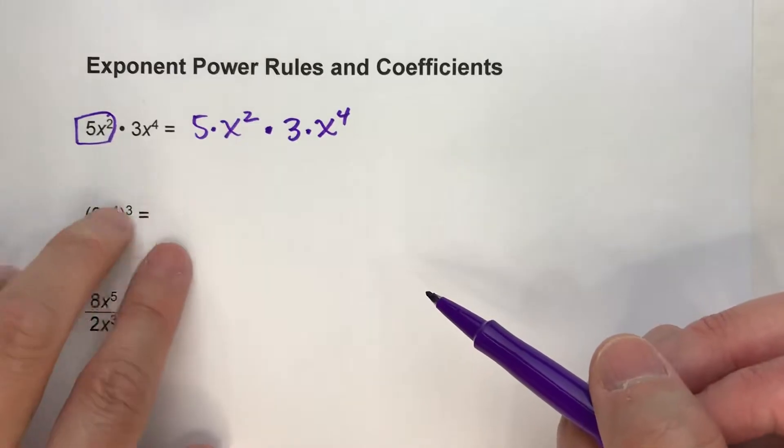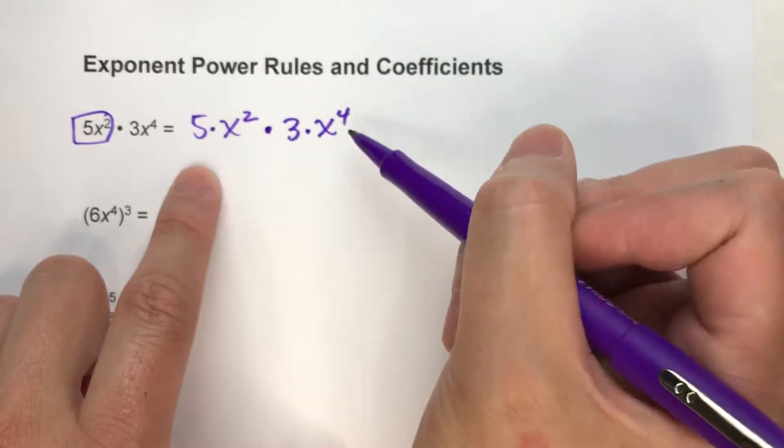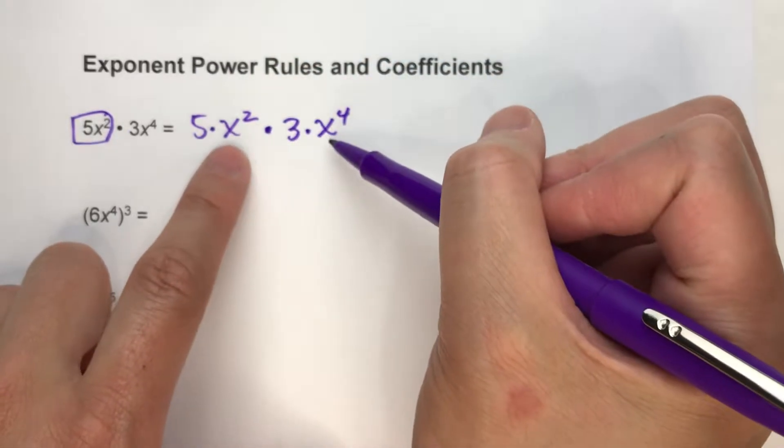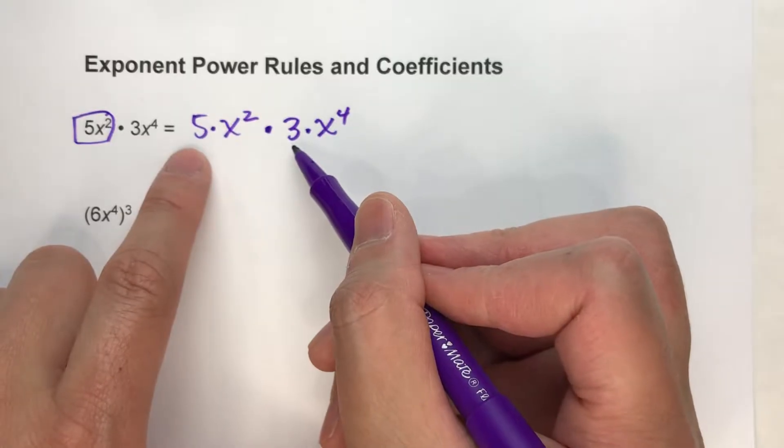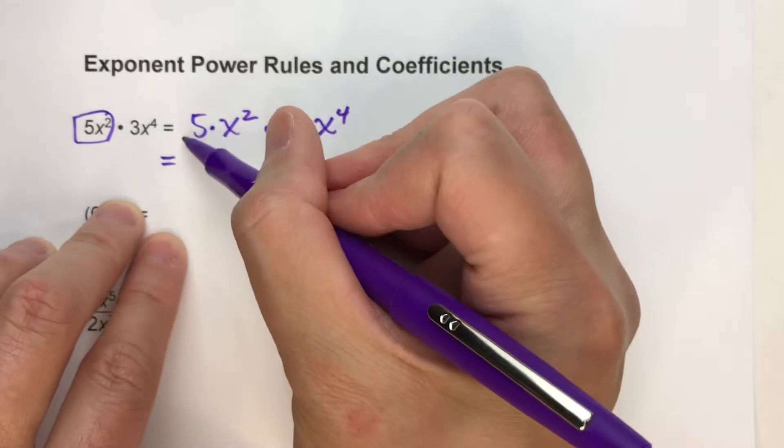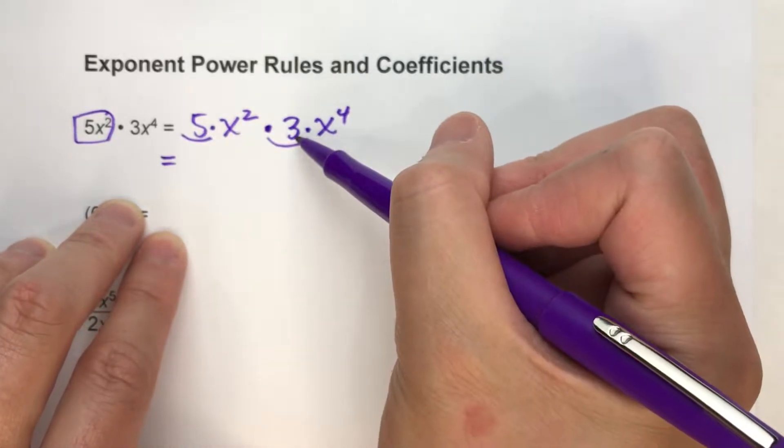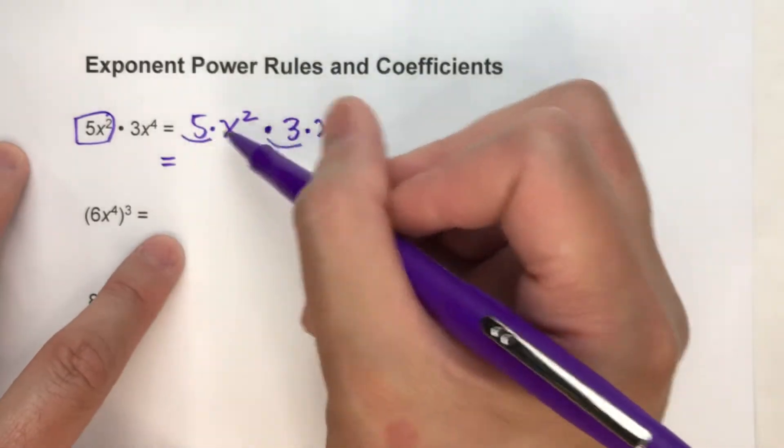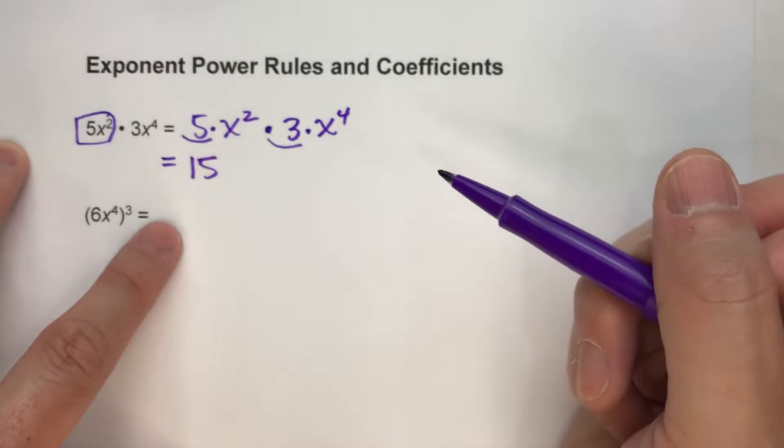Now, if I want to simplify this, what's tricky is when I multiply this out, I'm going to multiply the powers using the power rules. But multiplying the coefficients is just like multiplying normal numbers. For example, if I'm multiplying this out, I can do the 5 times 3 just like multiplying basic numbers. 5 times 3 is 15. So my new coefficient is going to be 15.